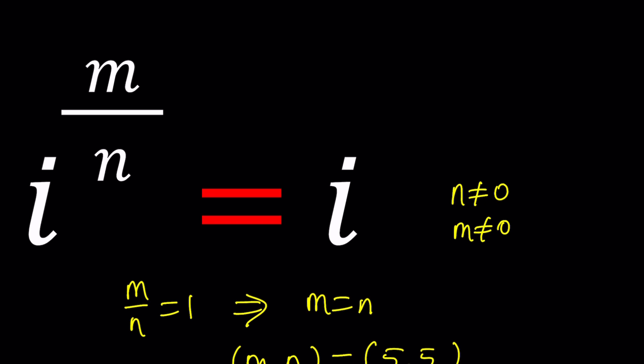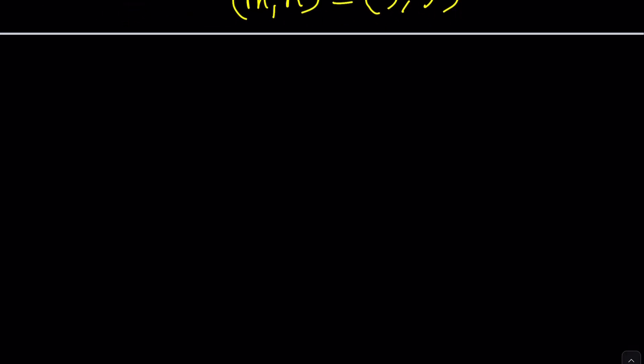Let's try to find non-trivial solutions. How do we go about solving them? i to the power m over n equals i. We can actually approach this with Euler's formula, which is the complex exponential. How do you write i as a complex exponential? Easy, e to the power z.